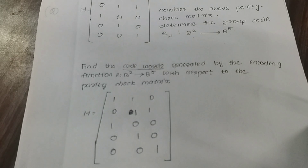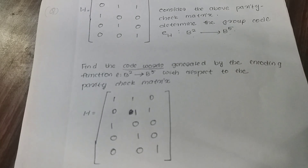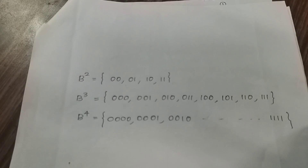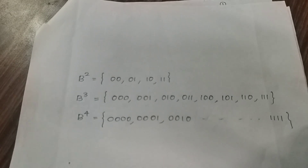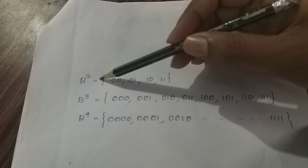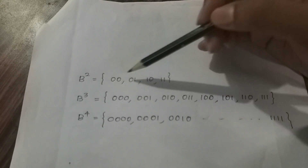Now we can find the model questions. If you want to find the domain b² and b³, we can find the same thing. In the elements of b², there are two positions.